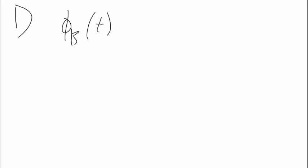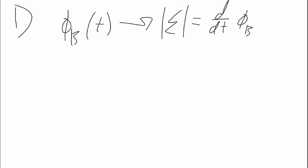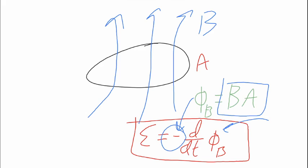For problem number one, they give you an equation for the magnetic flux with respect to time and ask you to find the magnitude of the EMF at a certain time. That's a pretty straightforward calculation — the magnitude is just the absolute value of the time-based derivative of the magnetic flux equation given. You just do a power rule derivative and plug in the time. The second part asks for the direction, and this is where the negative sign in Faraday's Law comes into play. This negative sign tells us something called Lenz's Law.